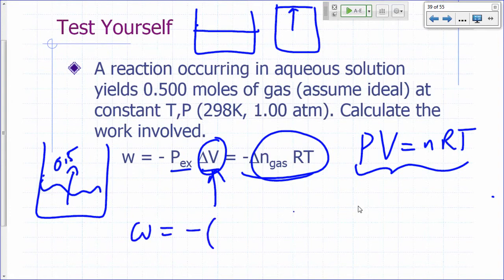So what would be the work involved here? Work would just be negative, change in moles of gas, and this problem is given as half a mole. So 0.500 moles of gas times RT. What is RT?